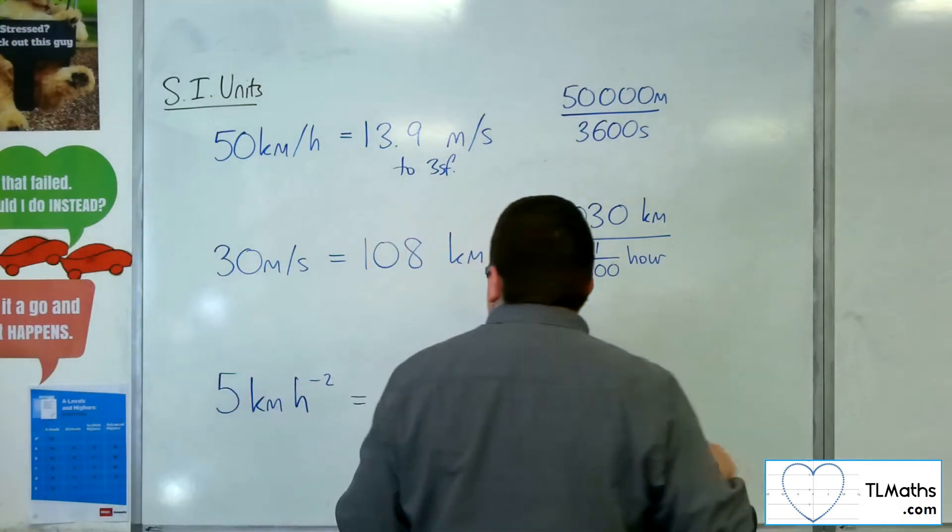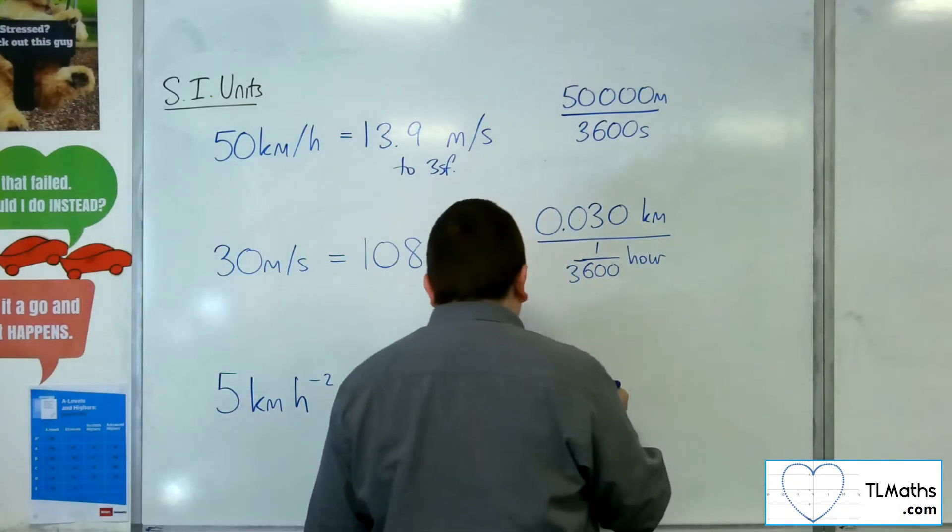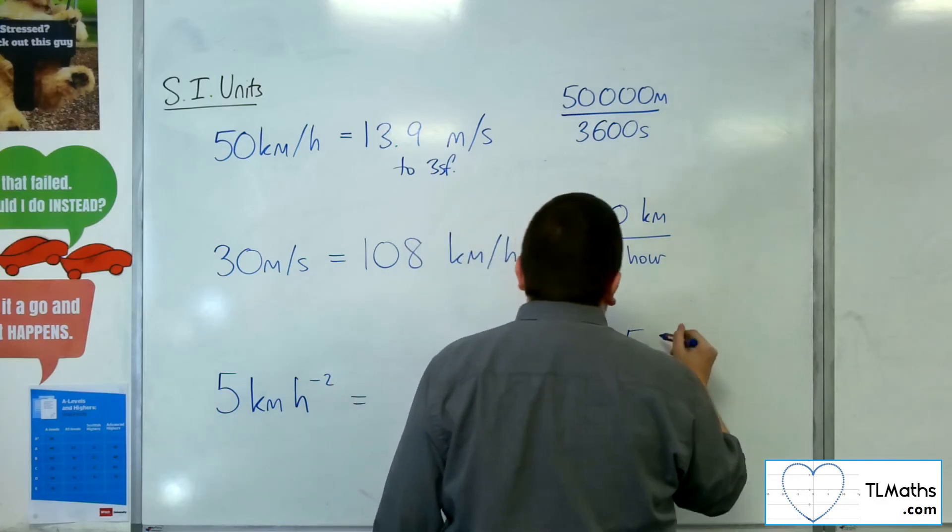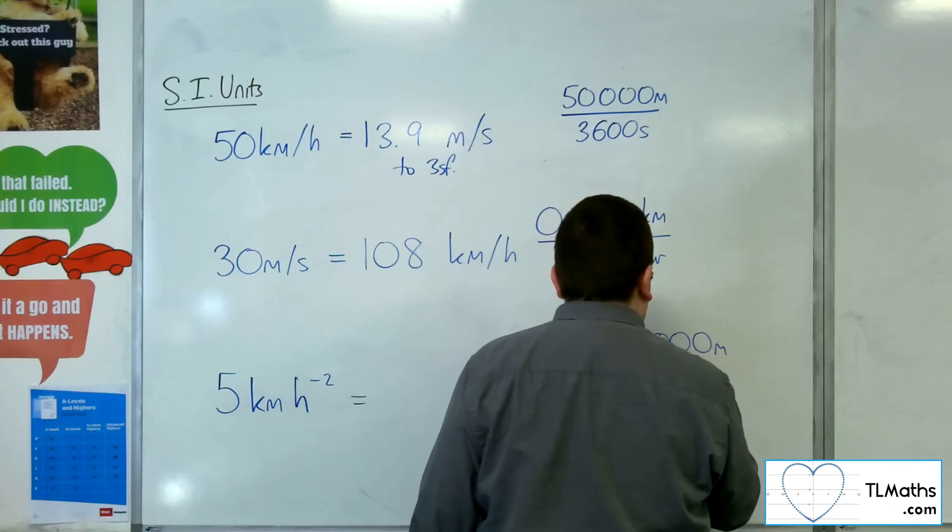So what have we got then? We've got 5 kilometres per hour per hour. So we've got 5 kilometres, which I know is 5,000 metres.